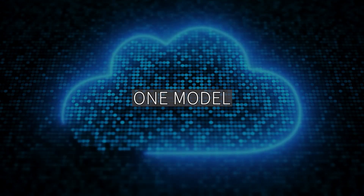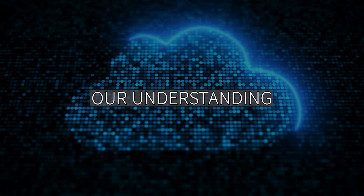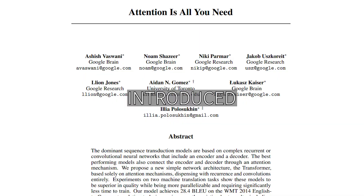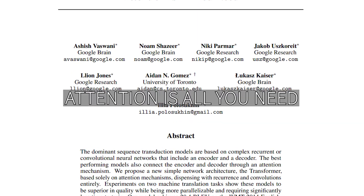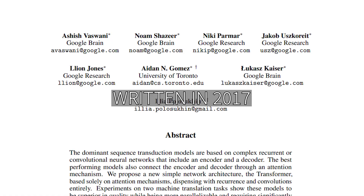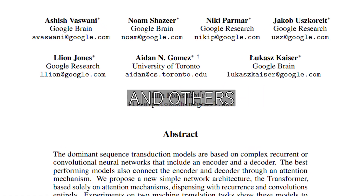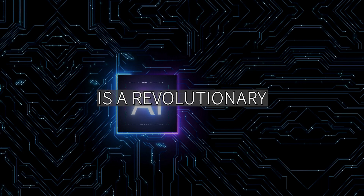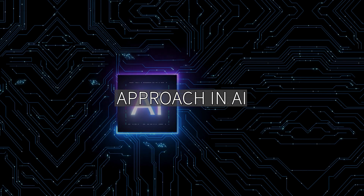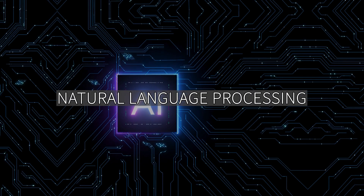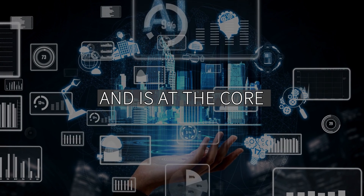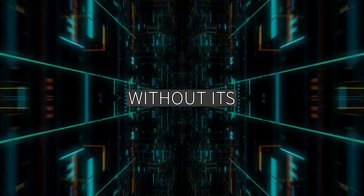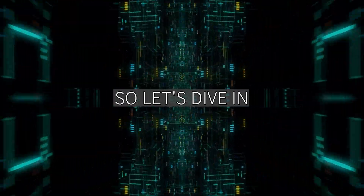In the world of AI, one model has transformed our understanding of language processing: the Transformer Model. Introduced in a paper titled 'Attention is All You Need,' written in 2017 by Ashish Vaswani and others from Google Brain and the University of Toronto. The Transformer Model is a revolutionary approach in AI, especially in natural language processing. It has revolutionized AI development and is at the core of chatbots like ChatGPT and others — but it's not without its limitations, so let's dive in.